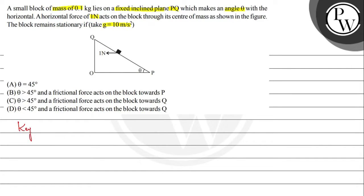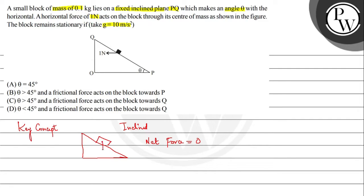Let us see the key concept for the question. When an object is in its equilibrium position on an inclined plane, for its equilibrium position, the net force on the particle should be 0. That is, the main components — the weight component and the frictional force acting upwards or any other force acting upwards to prevent its downfall.